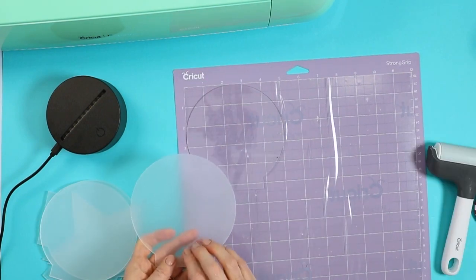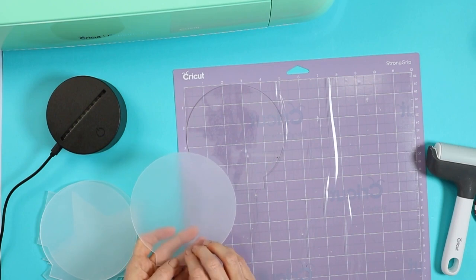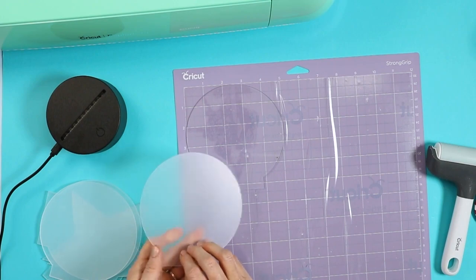Now we're going to repeat with one blank for each nightlight you're making. So we're only going to engrave one of the blanks for each nightlight, even though you need two for each nightlight.